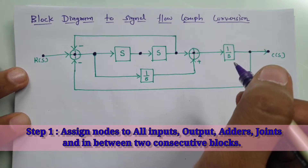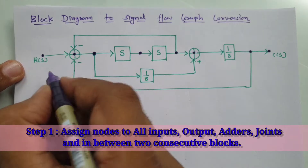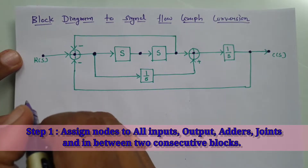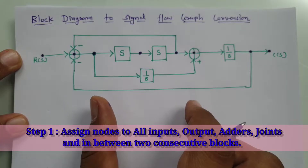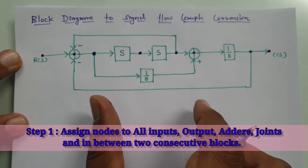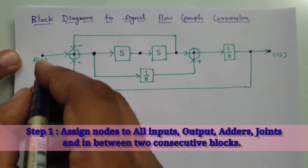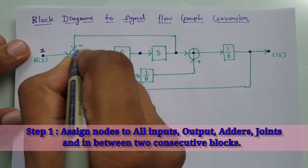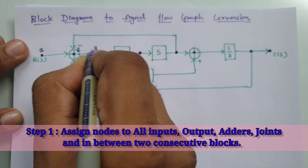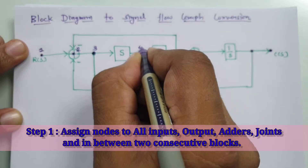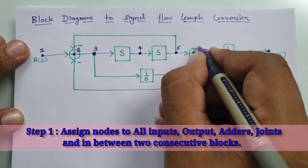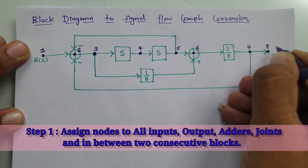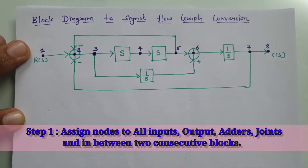Now we need to give names to all those nodes so that when we have the signal flow graph it will be easier to plot. So let us say this is node one, this is two, three, four, five, six, seven, and this is node eight.